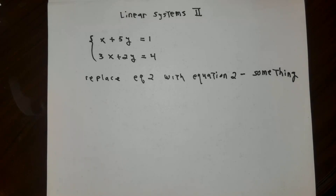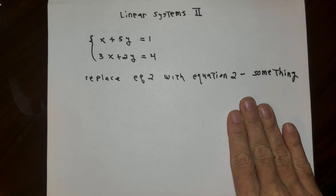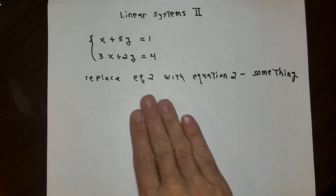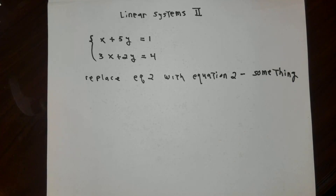One thing I can do is replace one of the equations with whatever that equation is minus some quantity. As long as the something isn't actually equal to equation number two, this process is reversible. I can take my new equation number two and add the something to both sides and recover the original equation number two. So I can add or subtract anything from both sides of equation number two, and that something is going to be picked in a careful way.